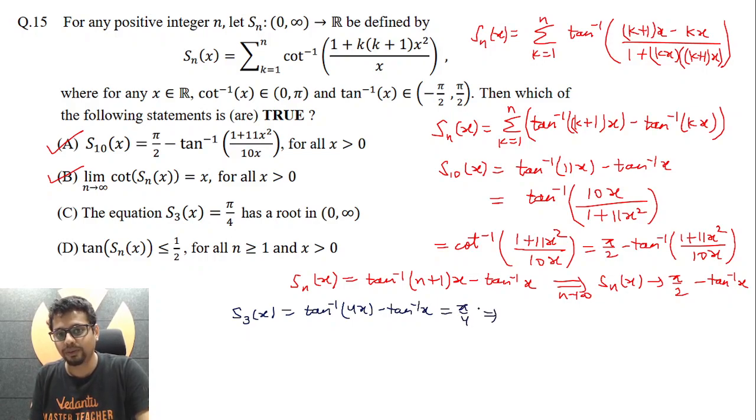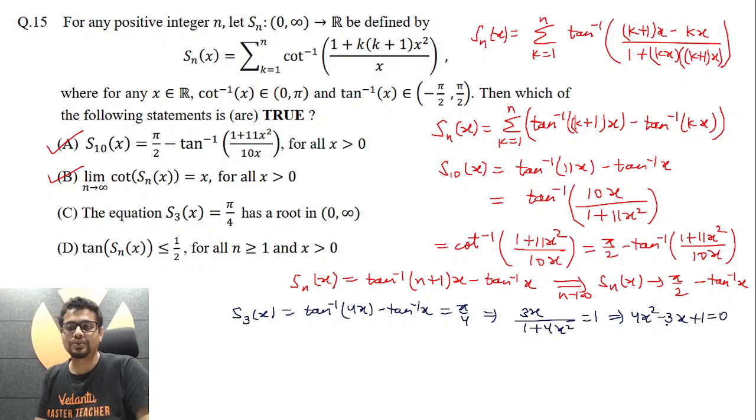That essentially means 4x square minus 3x plus 1 equal to 0. Now what about the discriminant? b square 9 minus 4ac minus 16, it's minus 7, it's negative. So discriminant being negative, that means it does not have any real root. What to speak of positive root? It does not have even real root. So here, C is incorrect.